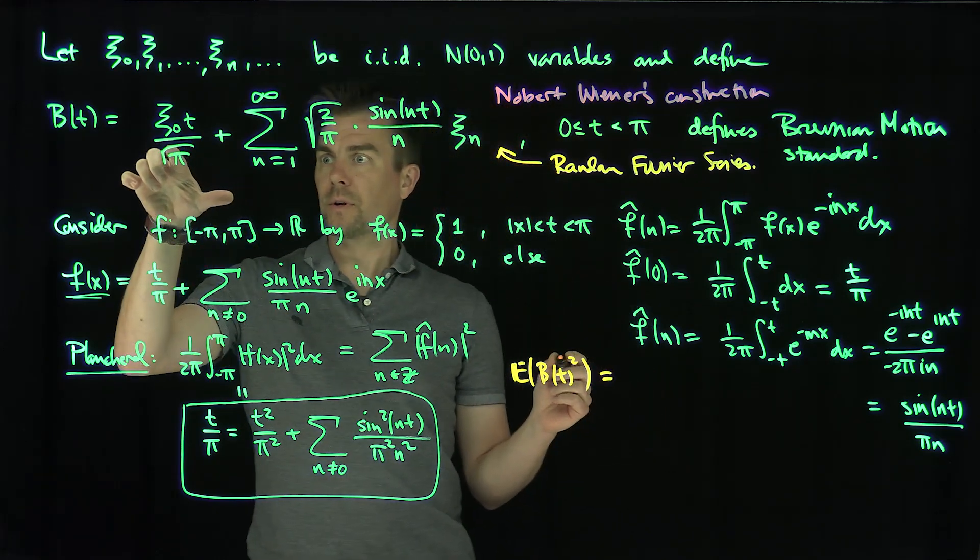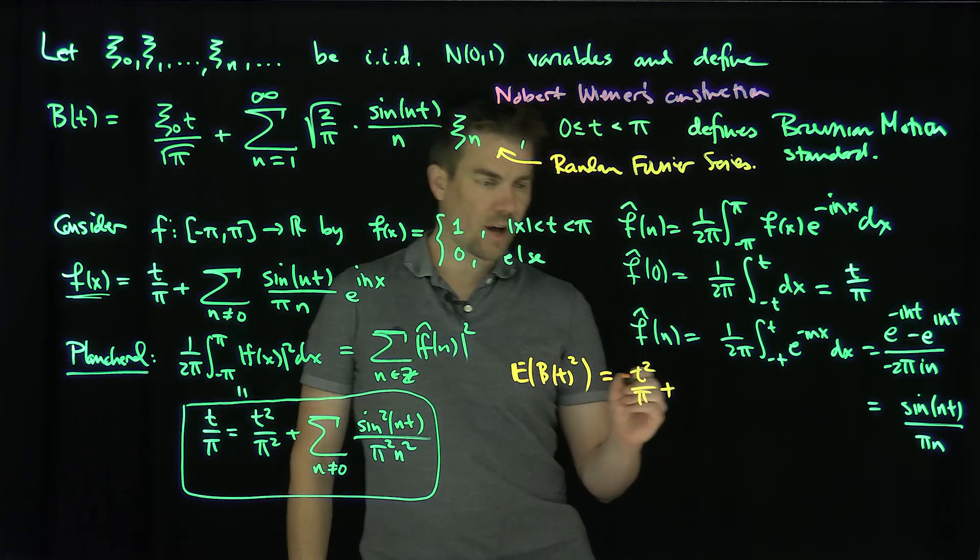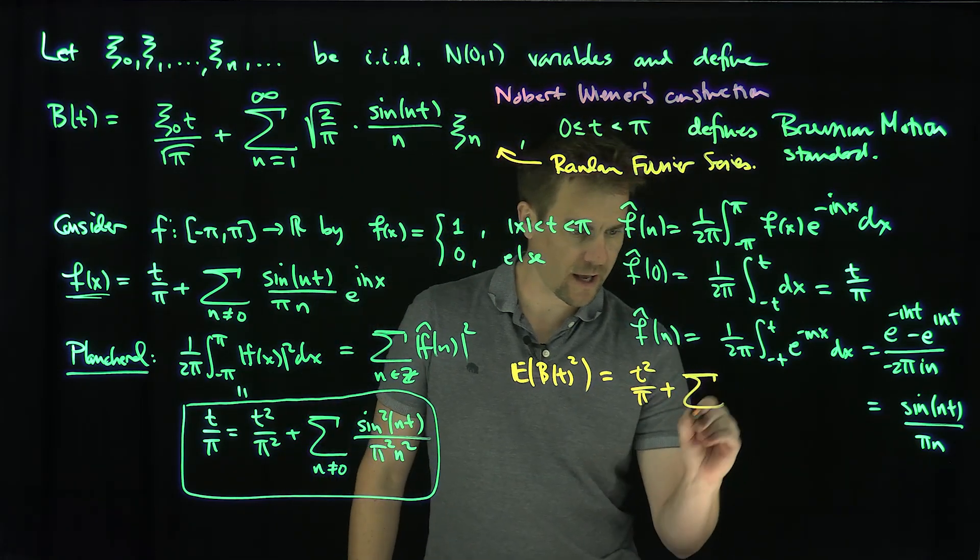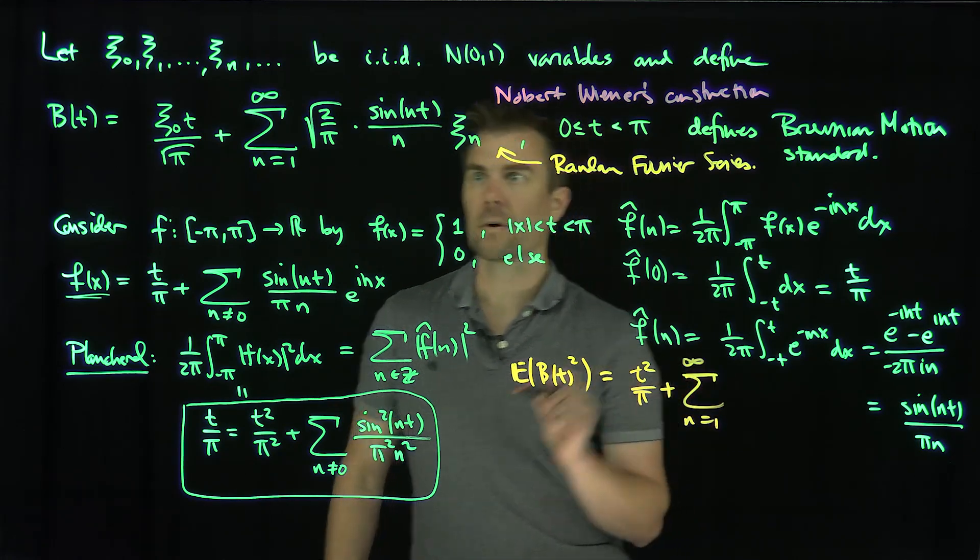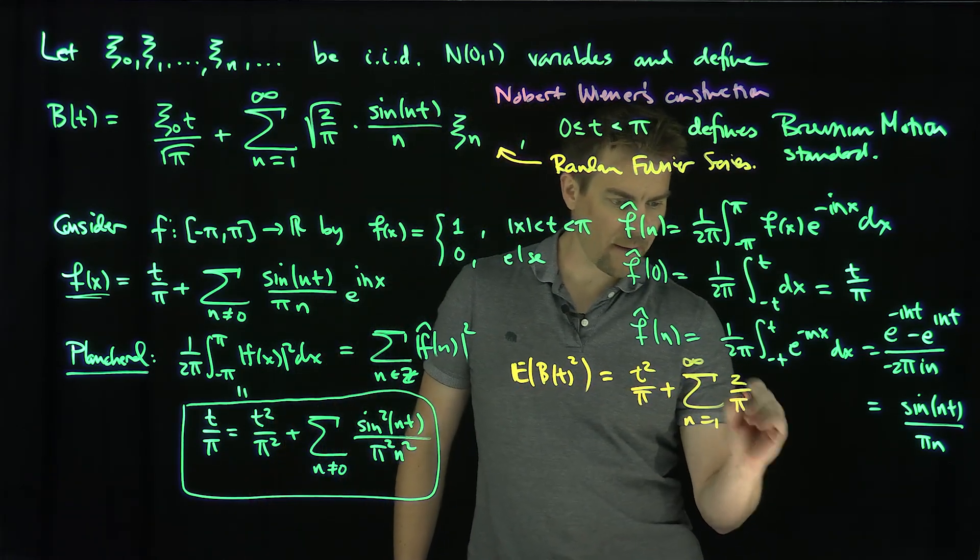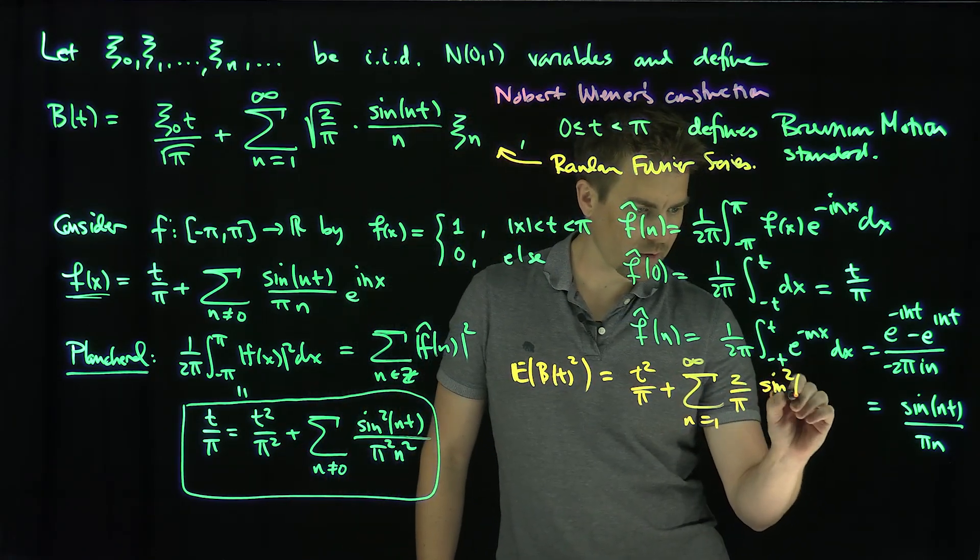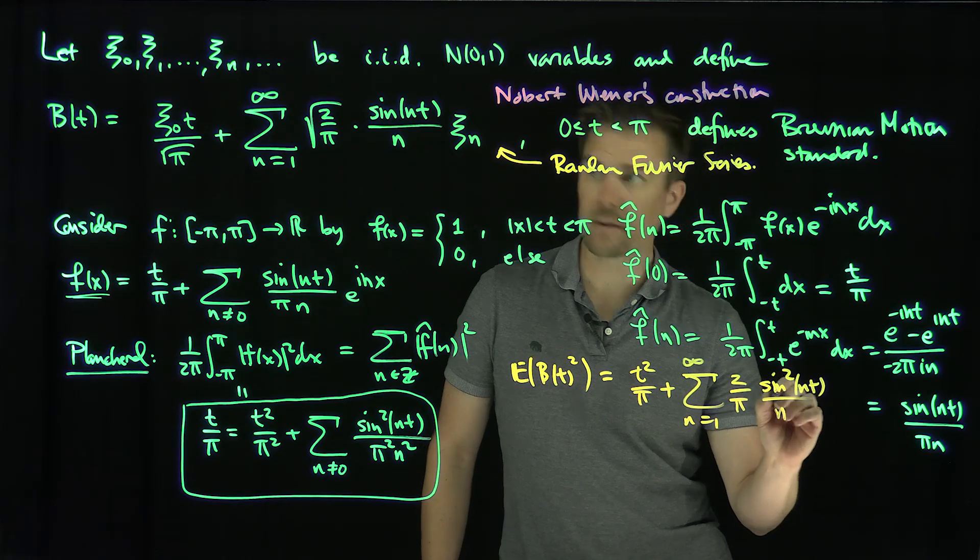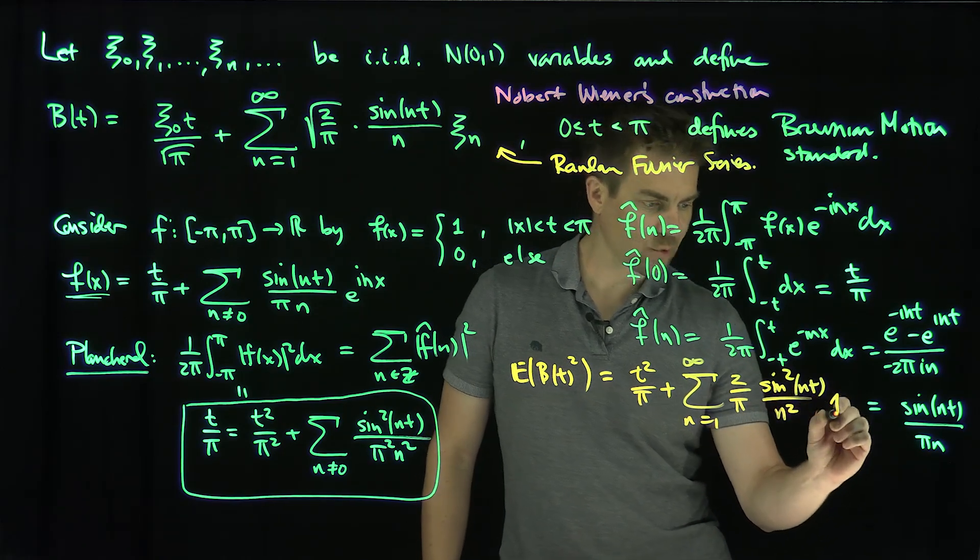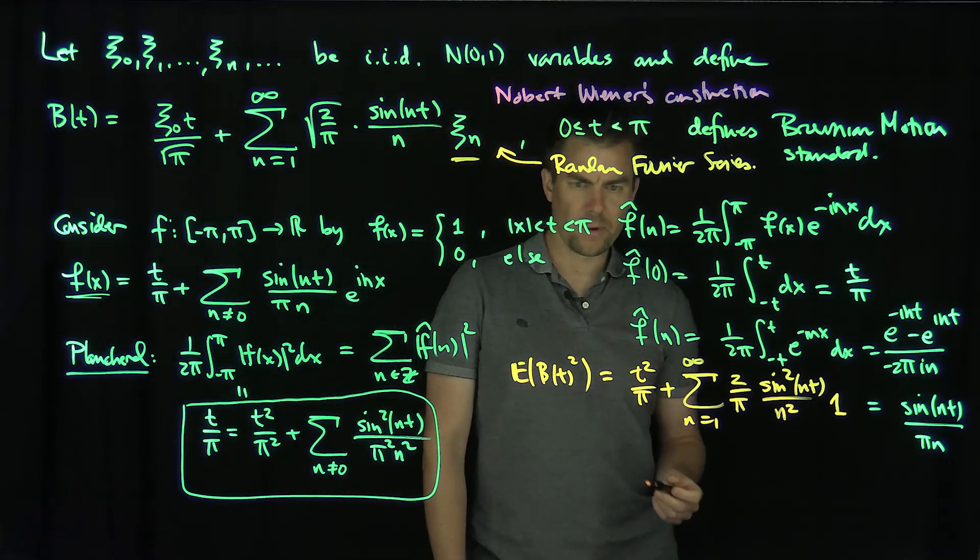So we're going to get this thing over here, and the expected value of ξ₀², and the expected value of any of these things squared is going to be equal to one. So this is going to be equal to t² over π, plus the sum n goes from one to infinity of 2 over π, and then all the sin²(nt) over n², and then times one, because that's the expected value of ξₙ².